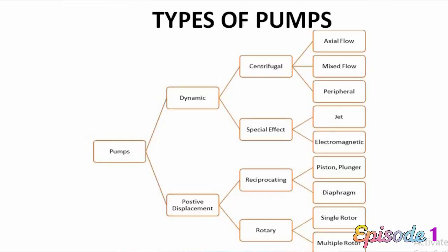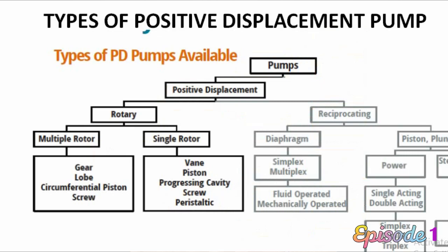There are many types of pump, as you can see on the screen. Mainly there are two categories: first, positive displacement pump, and the other is dynamic pump. In dynamic pumps there are two types: centrifugal and special effect. In the industry, centrifugal pumps are mostly used. Positive displacement pumps also have two types: rotary and reciprocating, with many varieties in their sub-categories.